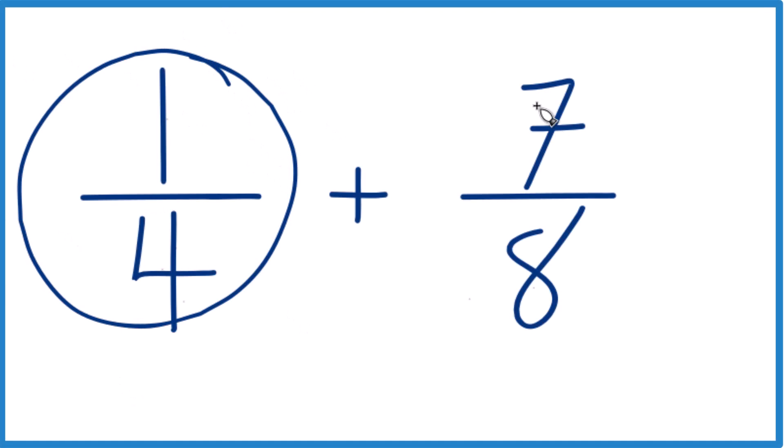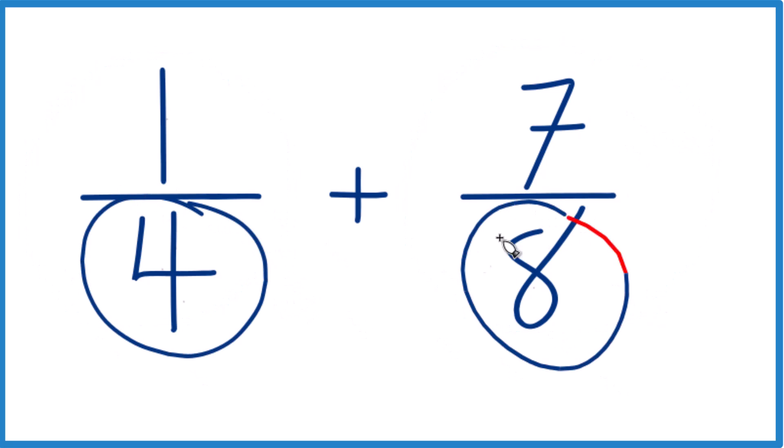If you need to add 1 fourth plus 7 eighths, here's how you do it. What we want to do first is get a common denominator. So we want these to be the same, because then we'll just add these numerators here, keep the denominator the same, our common denominator, and we'll be done.